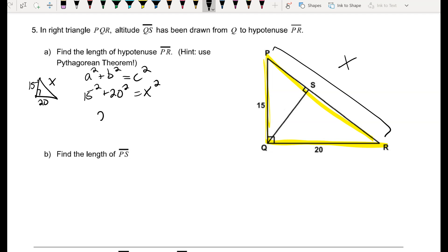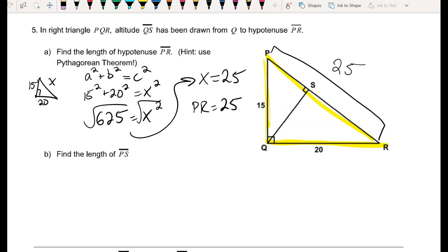My legs are 15 and 20, and I'm looking for that hypotenuse. 15 squared plus 20 squared is 625. And if I want to get rid of the squared on the X, the opposite of squaring something is taking the square root. So if you type that into your calculator, you'll find that your missing piece for PR is 25.